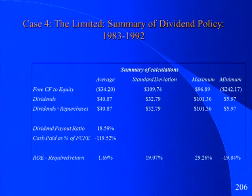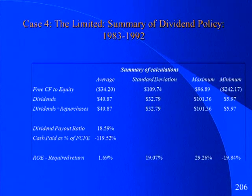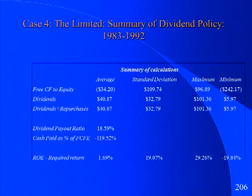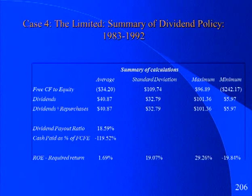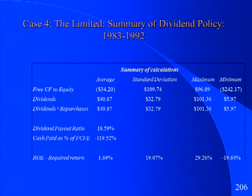Last example before the final one: The Limited. It was one of the big growth stories of the 1980s — now a mature company struggling to stay alive in the new retail landscape. From 1983 to 1992, at the peak of The Limited's growth, free cash flow to equity was negative $34.2 million each year on average. You shouldn't be paying dividends with negative free cash flow, yet they managed to pay out $41 million in dividends each year.